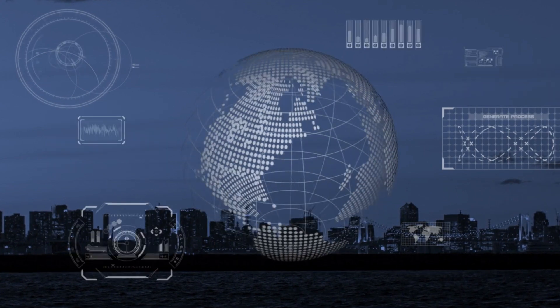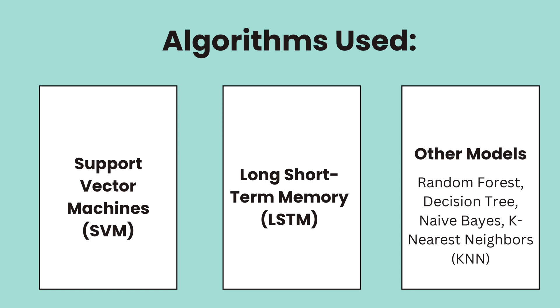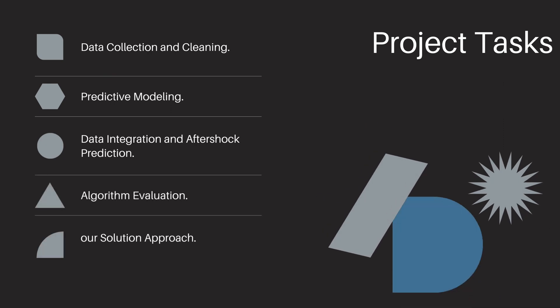We are training complex models like Support Vector Machine and Long Short-Term Memory network, and other models like Random Forest, Decision Tree, Naive Bayes, and K-Nearest Neighbor. This is a complete machine learning pipeline we are going to cover in this course: data collection and cleaning, predictive modeling, data integration, aftershock predictions, algorithm evaluations, and our solution approach. Watch the full video to learn more about the project methodology and results.